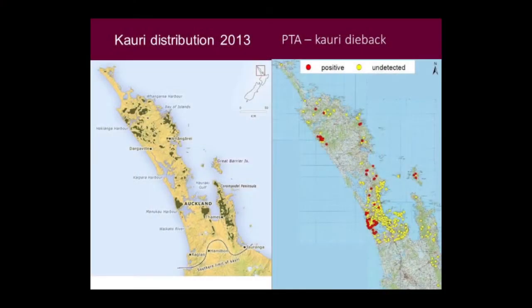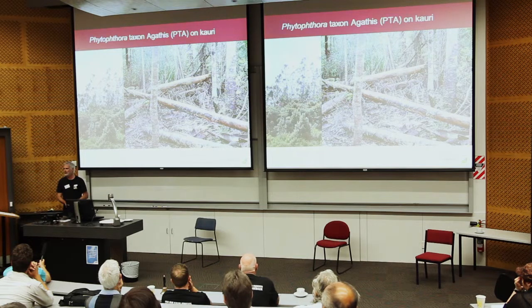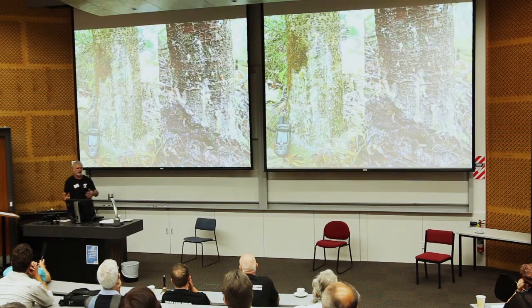We've already heard a little bit from other speakers about the importance of reducing spread, and I want to start my talk the same way, even though that isn't the theme of my talk. The absolute most vital thing about the preservation of kauri forest as we know it is to prevent its spread. But what about the areas that are already infected, where we have these foci of infection that we know are going to just gradually spread?